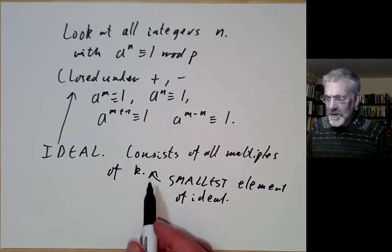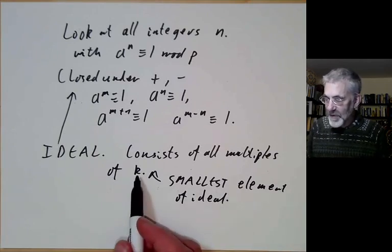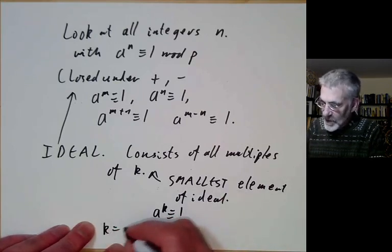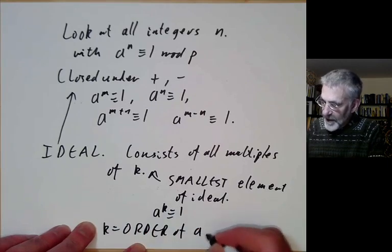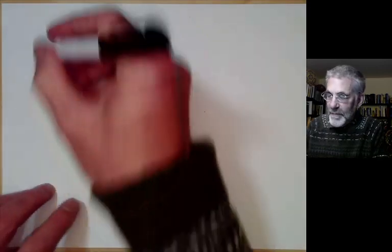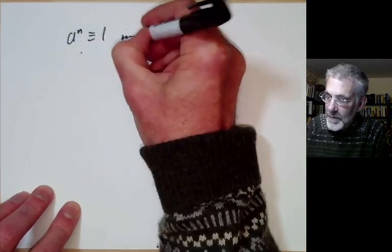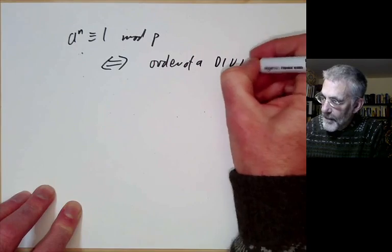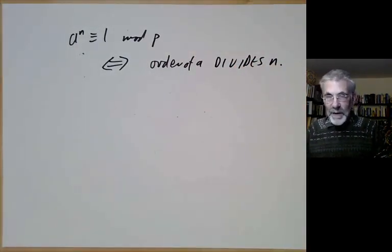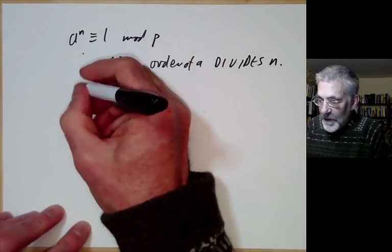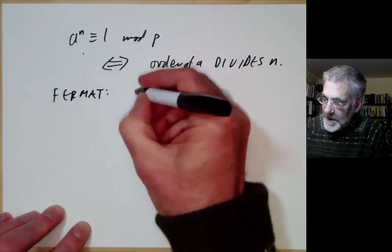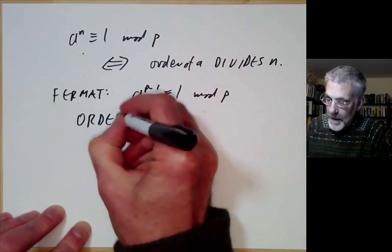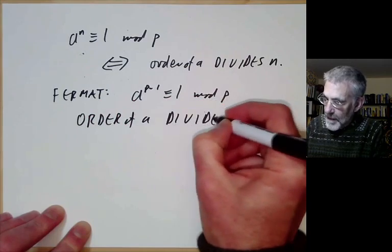The smallest element of the ideal is just the smallest number such that a to the k equals 1, i.e., k is equal to the order of a modulo p. So we've found that a to the n is congruent to 1 modulo p if and only if the order of a divides n. Recalling Fermat's theorem, a to the p minus 1 is congruent to 1 modulo p, so obviously the order of a divides p minus 1.